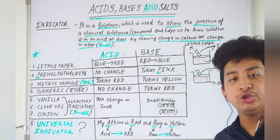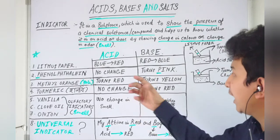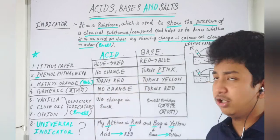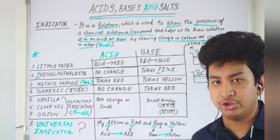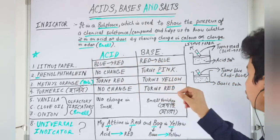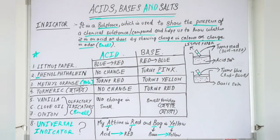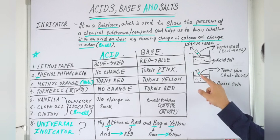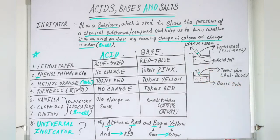When the solution turns the litmus paper red, it indicates that it is an acidic solution. Similarly, if we have red litmus paper and dip it in a colorless solution, and the color changes from red to blue, we can understand that it is a basic solution.